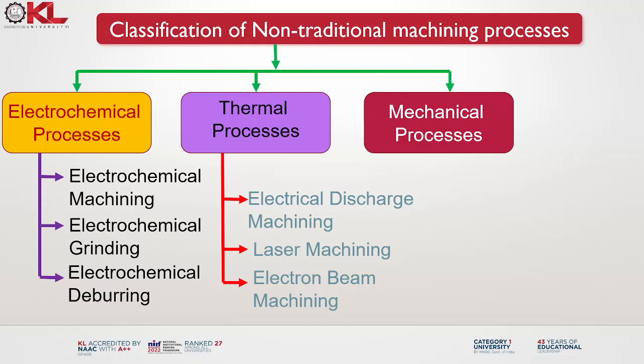Electrical discharge machining, also known as spark machining or spark erosion, is a non-traditional machining process that uses electrical discharge to remove material from a workpiece. It is commonly used for machining complex shapes, hard materials and parts with high precision. It is widely used in industries such as aerospace, automotive, medical and electronics where high precision and complex shapes are critical.